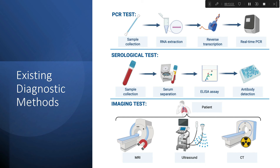There are different diagnostic methods already available for detecting COVID-19. First is the PCR test — sample collection, RNA extraction, reverse transcription, then real-time PCR. Another is the serological test involving serum separation and ELISA assay — an antibody detection test. It is not a direct test for COVID, but checks whether antibodies are strong enough against viral infections.